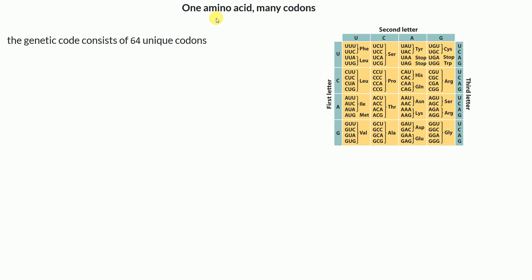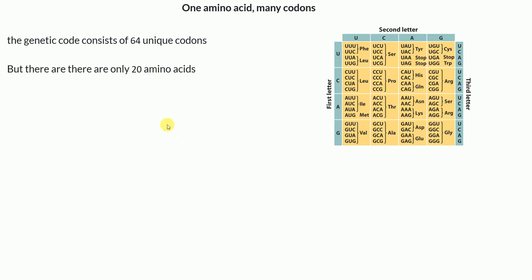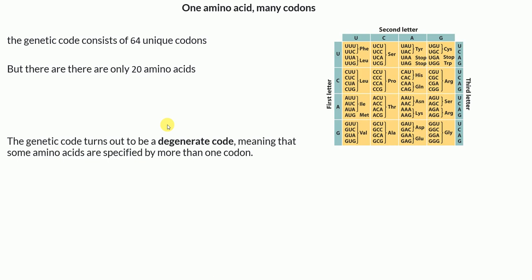Now, many codons actually code for the same amino acid. The genetic code table consists of 64 unique codons, but we only have 20 amino acids. With three stop codons and one start codon, there are still many remaining codons. The answer is that the genetic code is degenerate — meaning the same amino acid can be coded by more than one codon.